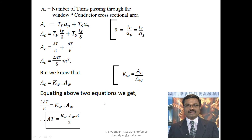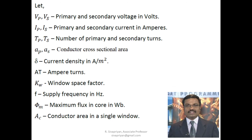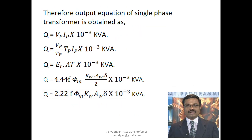In an examination, if asked to write the output equation for single-phase core type transformer, draw only the core type cross-sectional figure. If asked for the shell type, draw only the shell type sectional view. The derivation remains the same for both — that is the key difference between the two configurations in examination context.